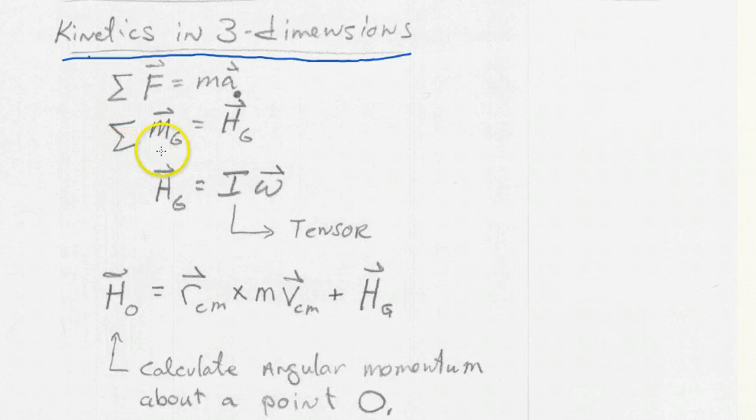We need to add this one, the sum of all the couples. And remember, these are these R cross F forces given by M is equal to the time derivative of the angular momentum here.